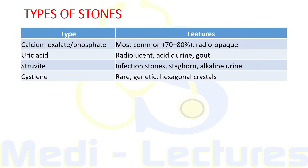Basic stone types include calcium oxalate — most common — followed by calcium phosphate; both are radio-opaque. Uric acid stones are radiolucent, formed in acidic urine especially in gout. Struvite stones are secondary to urinary tract infection, usually forming large staghorn calculi in the renal pelvis in alkaline urine. Cystine stones are very rare, due to the genetic condition cystinuria, and the crystals are hexagonal.